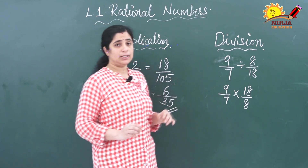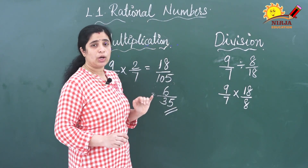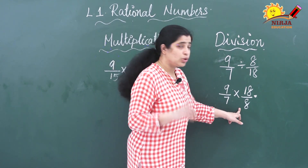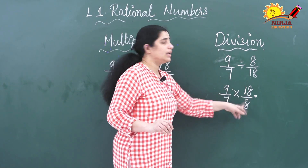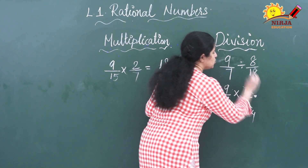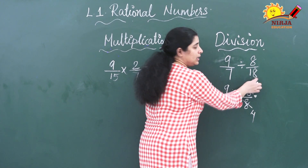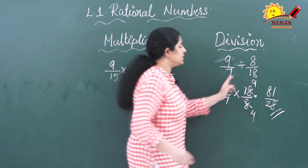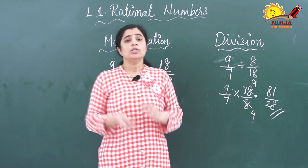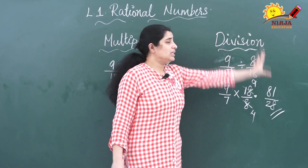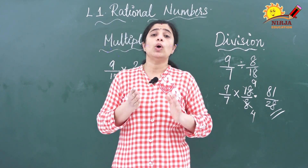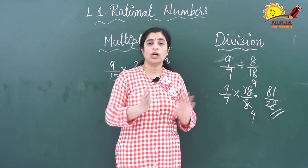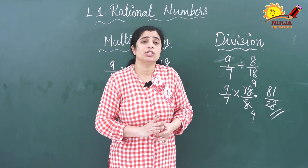Now you can do the multiplication. Before multiplying, you can do cancellation: 18 and 8 can both be divided by 2. So 4 twos are 8, and 9 twos are 18. Now multiply: 9 twos are 18 and 7 twos are 14 — giving the final answer. Like this you have to do the division of a rational number: multiply the first number by the reciprocal of the second number, interconverting the numerator and denominator.